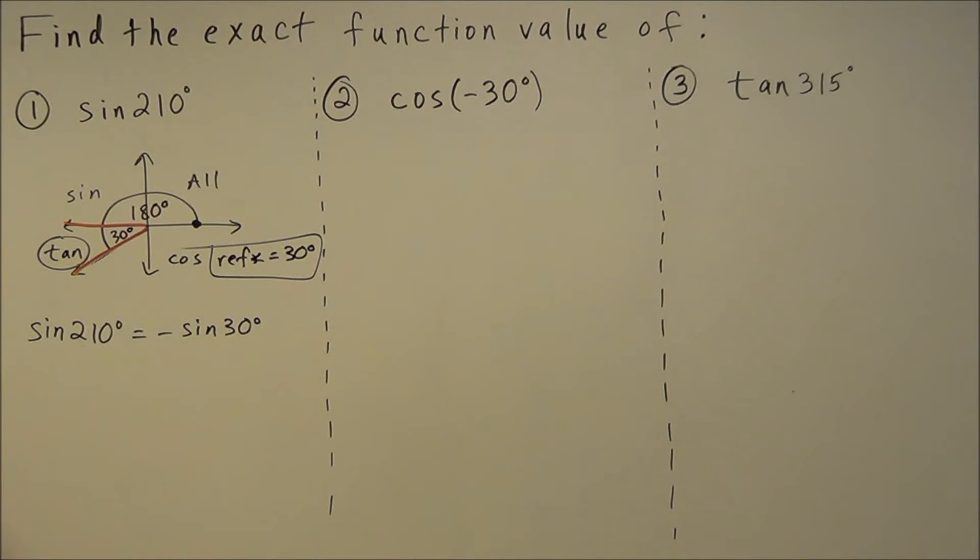To simplify this, you just need to know the trig values of 30, 60, 45 degrees for these particular problems. Sine of 30 degrees is equal to 1 half, so this works out to negative 1 over 2.